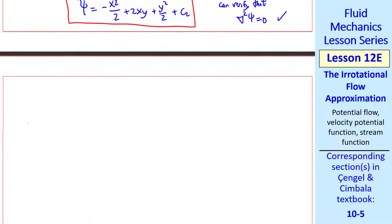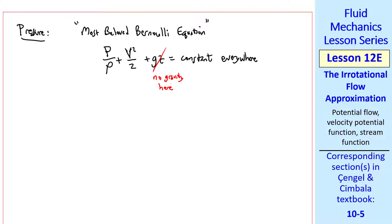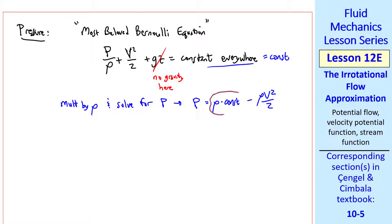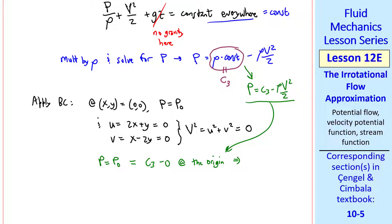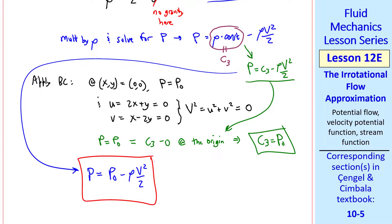Finally, let's calculate the pressure using the most beloved Bernoulli equation, ignoring gravity. Multiplying by rho and solving for p gives p equals rho times the constant minus rho V squared over 2, where rho times a constant is just another constant c3. Applying the boundary condition — at the origin p equals p0, and both u and v are zero there, so V squared equals zero — we get c3 equals p0. Therefore the final pressure field is p equals p0 minus rho V squared over 2.